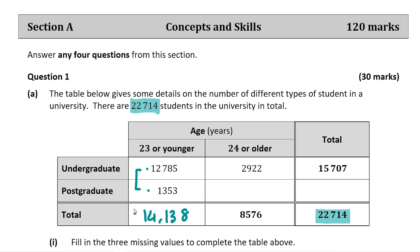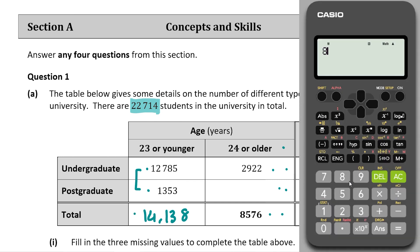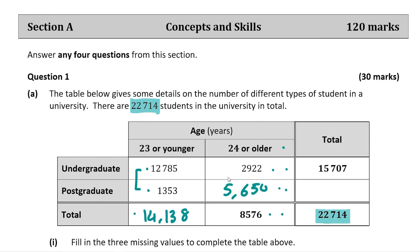Now for this value here, it's 24 or older. We have the undergraduate value but we don't know how many postgraduate students there are. We do have the total number of students who are 24 years or older, which is 8,576. We take away the undergraduate value to find the number of postgraduate students who are 24 or older, and we get 5,654.